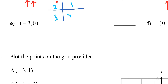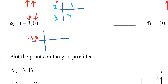For letter E, this one is different — we go left 3 units and don't move vertically, so we're on the x-axis. The point is negative 3 comma 0, and you're not in any quadrant, so the answer is none.